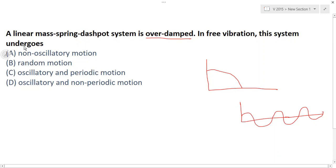So option A is clearly the right option: non-oscillatory motion. If there is given underdamped, this is for overdamped, and this is critically damped. For underdamped, it comes like that - it oscillates and moves to zero.